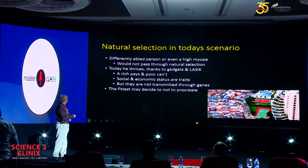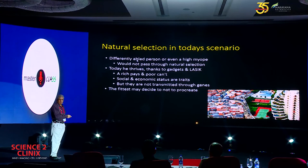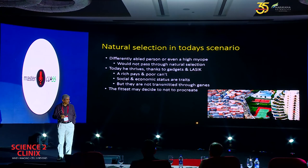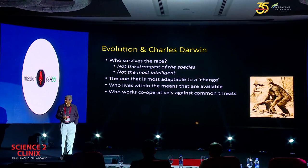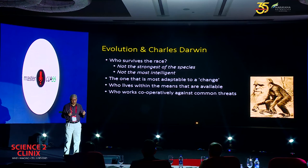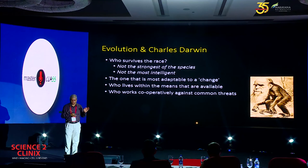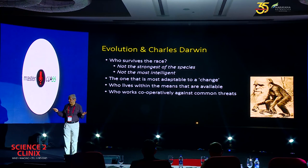Natural selection in today's scenario — consider a disabled person who is very rich; he can always correct his disability and propagate. And a person who is the fittest may not procreate and may end up finishing his genes at that point. So the fittest natural selection idea may not apply in today's scenario. At the end, Charles Darwin said: who survives in the race? Many think it is the strongest — he may not survive. Some think the most intelligent — he may not. The person who survives in today's world is the person who can adapt to change, who lives within the means available around him without fighting. And the person who works cooperatively against threats is the person who is going to survive. Thank you.